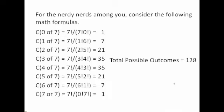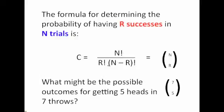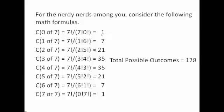For the nerdy nerds among you, consider the following math formulas. The first one, getting no heads out of seven throws is seven factorial divided by seven factorial over zero factorial. Remember the formula? Seven factorial over seven factorial times seven minus seven factorial. By definition, zero factorial is one. So we wind up with seven factorial divided by seven factorial and the count of times that would happen would be one.